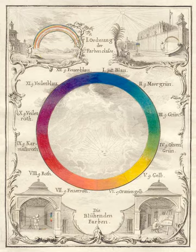The most important problem has been a confusion between the behavior of light mixtures, called additive color, and the behavior of paint, ink, dye, or pigment mixtures, called subtractive color. This problem arises because the absorption of light by material substances follows different rules from the perception of light by the eye.